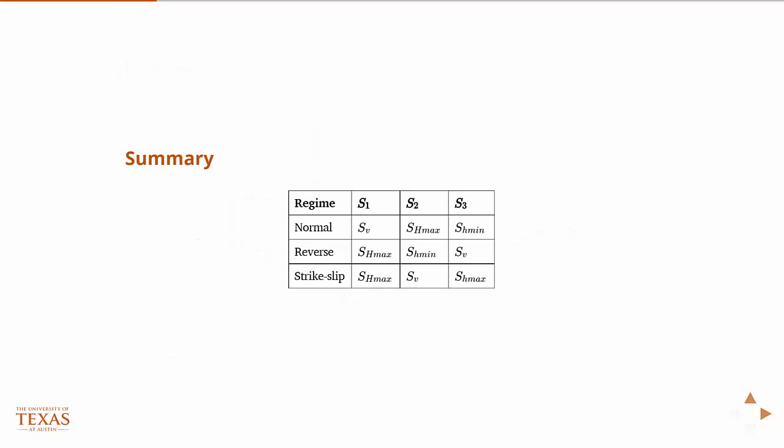So just in summary, we have this chart. I think there was a similar chart in the book. And possibly it would have been more easier to remember if I were to place strike slip between normal and reverse, because then you just have the vertical stress along the diagonal.